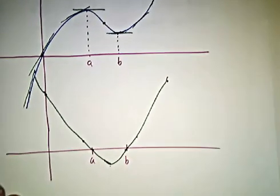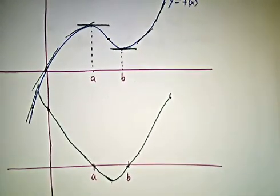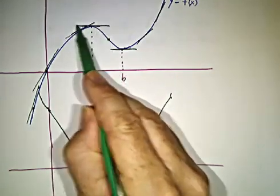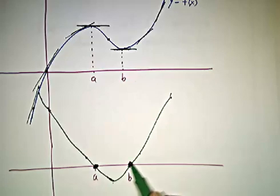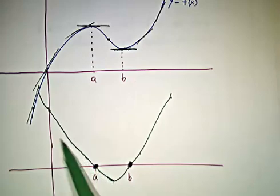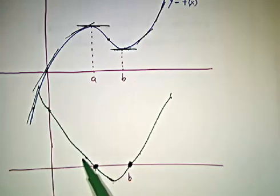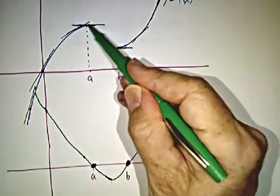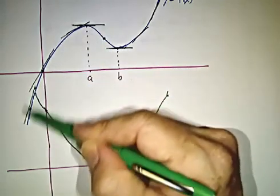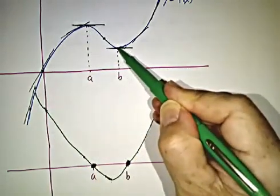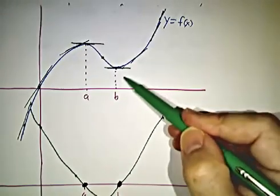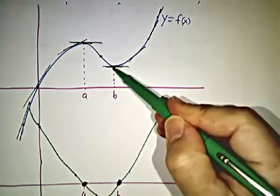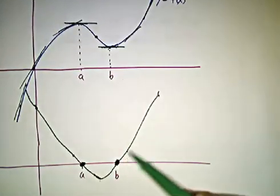To revisit our example: the original function leveled off at x equals A and at x equals B, so f'(A) and f'(B) are 0. Over here, f'(x) is positive — we're above the axis — because the original function is increasing. From A to B, the original function is decreasing, so the derivative is negative. From B onward, the original function is increasing, so the derivative is positive.